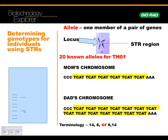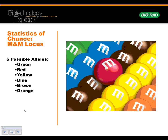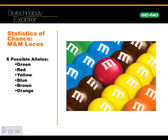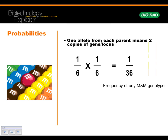Now let's apply the math to something we can relate to — candy, M&Ms. Let's say one M&M represents an allele, and there are six possible alleles: green, red, yellow, blue, brown, orange. What are the chances of getting one of those colors? It would be one in six. So if you were given an allele from mom, you have a one in six chance of getting that allele, and a one in six chance of getting, say, the red allele from dad. To get the frequency of any M&M genotype, you multiply them — one in six times one in six — and you get one in 36. So a one in 36 chance that you would get the same allele from each parent.